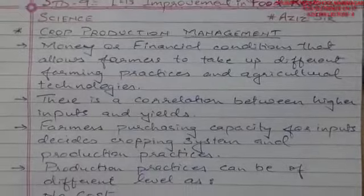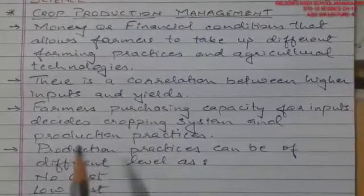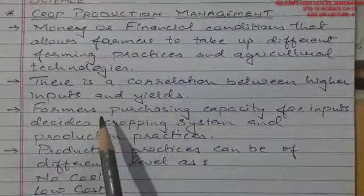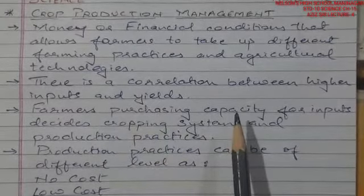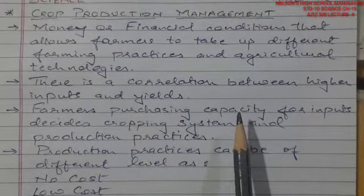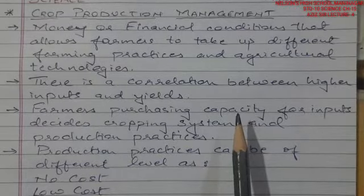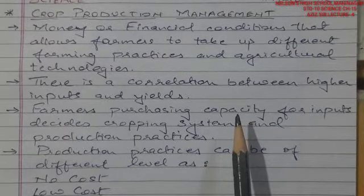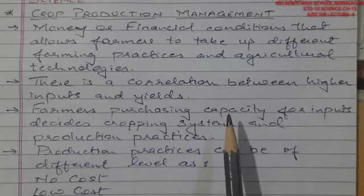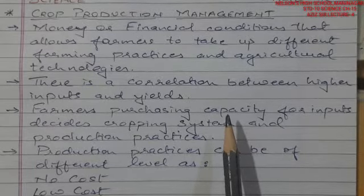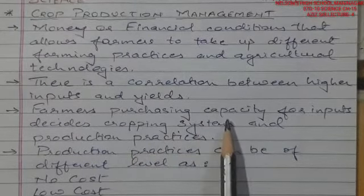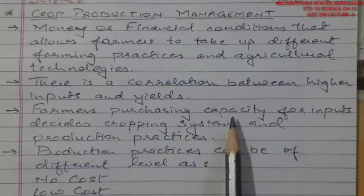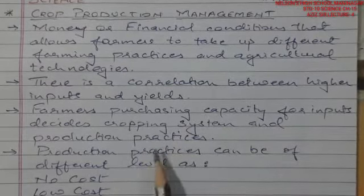There is a correlation between higher inputs and yields. As you put in better value of money — higher category of seeds, higher quality of manure, good quality of fertilizers, and good technology like tractors and equipment — you can have a faster yield, better irrigation facility, and output will certainly be better.